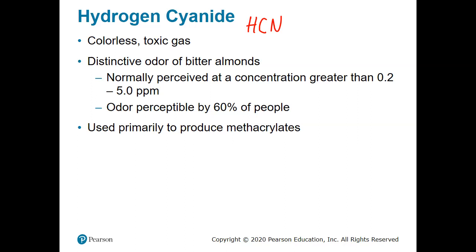That odor is noticeable by about two-thirds of the population — about 60%. Hydrogen cyanide does have industrial uses; methacrylates are the most common — it's a polymer precursor. It is a toxic material, and one advantage is that it does have an odor, so with recognition of that odor we can start to send warning signals throughout our body to get out or figure out how to mitigate the source.